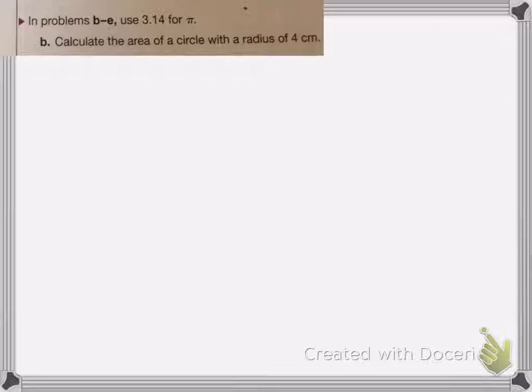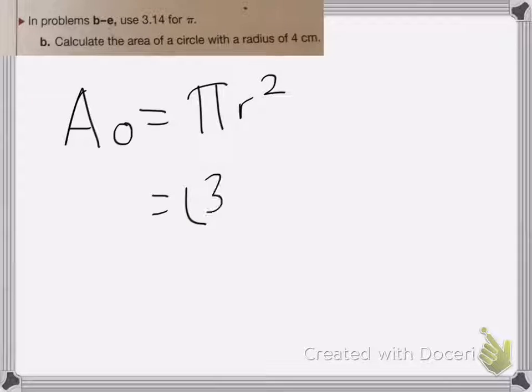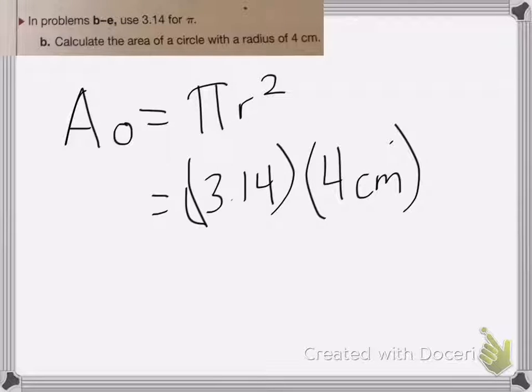So last problem, calculate the area of the circle with the radius of 4 centimeters. So remember, the area of my circle is equal to pi r squared. So we'll put in the numbers, pi is 3.14, and we're going to multiply that by r squared. r is 4 centimeters, and we're going to square it. 4 squared.